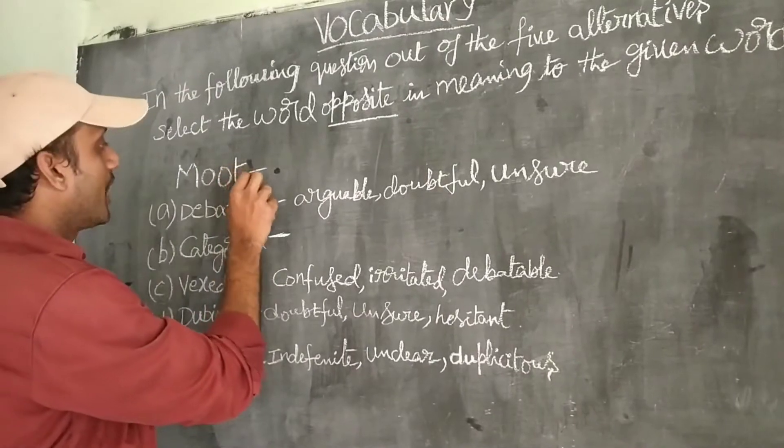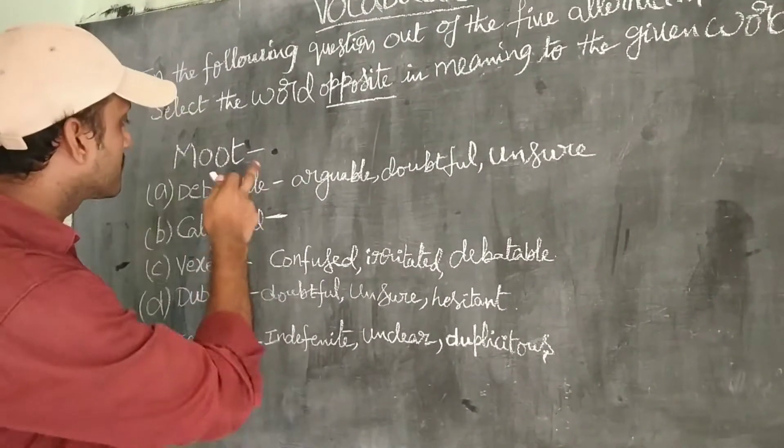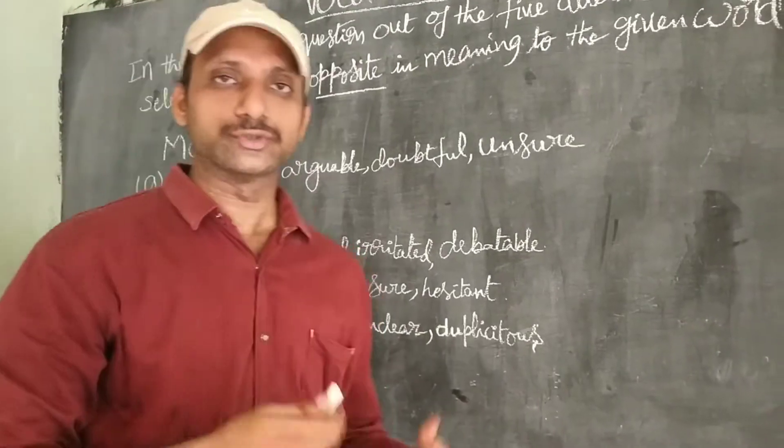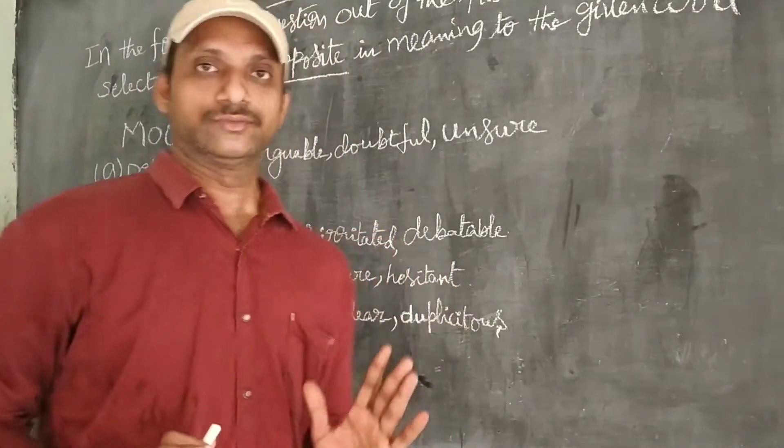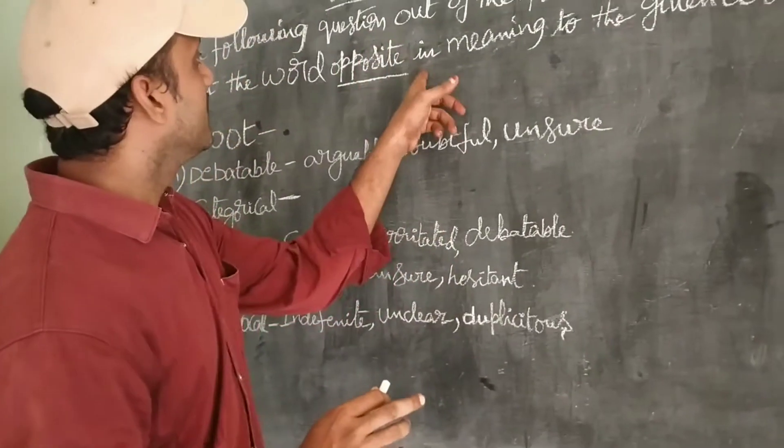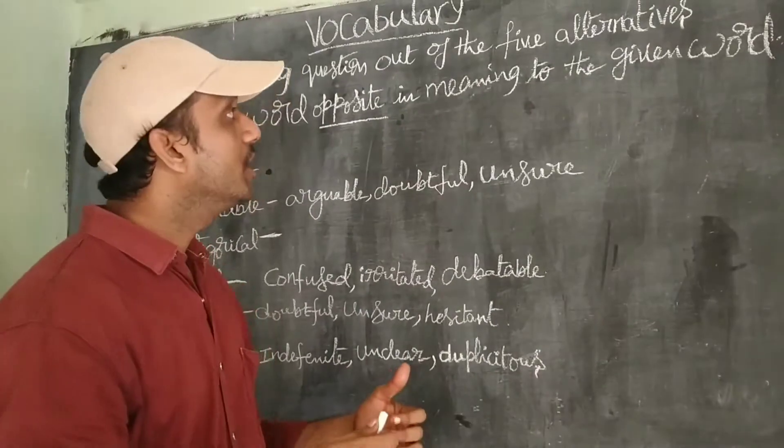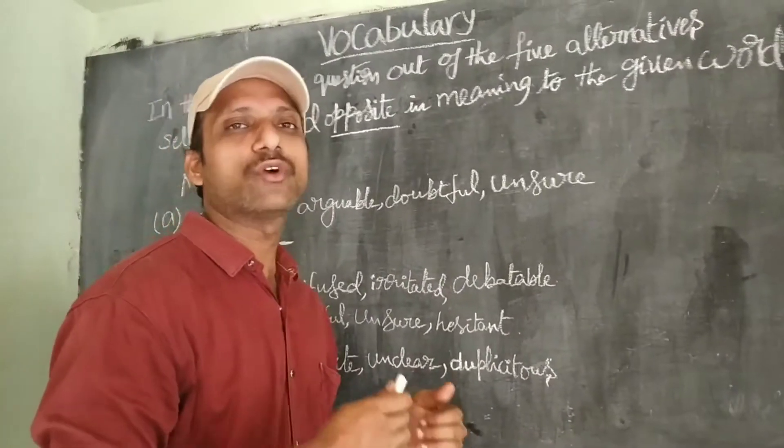Select the word opposite in meaning. You have to observe this word very carefully. Opposite in meaning to the given word. In the sense, we have to write opposite to this word. Moot. We have to write opposite to this word. He has given five options here. And one more thing I am telling you. While you are reading this, you have to read it in a quick manner. You have to improve your reading skills in a fast manner.